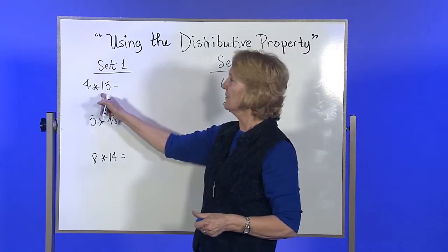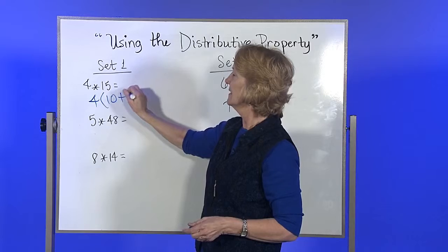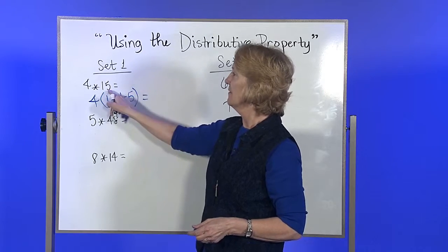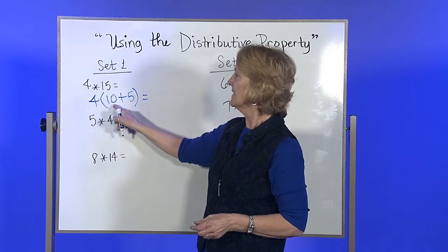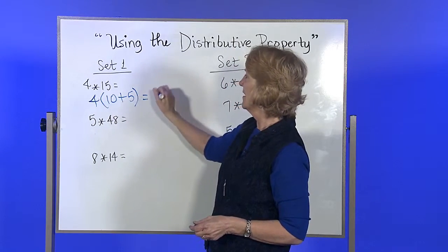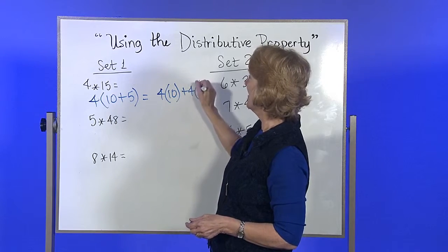Okay, if you have 4 times 15, that's the same as 4 times 10 plus 5. 15 is the same as 10 plus 5. So 4 times the 10 plus 4 times the 5.